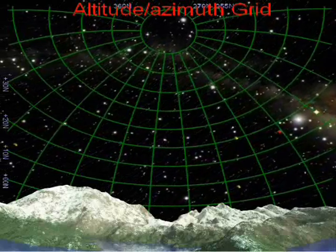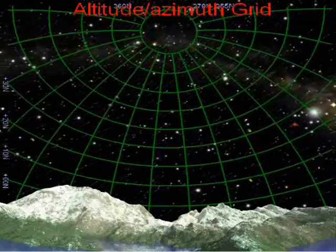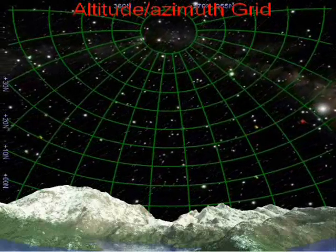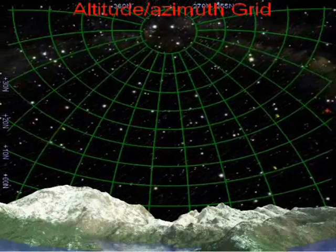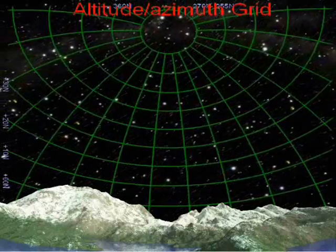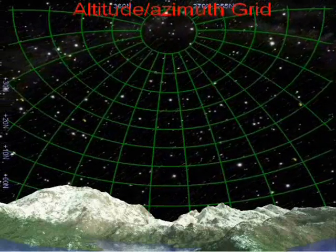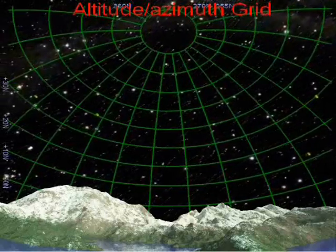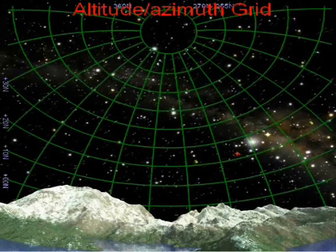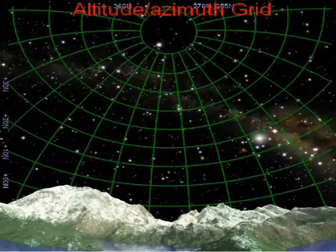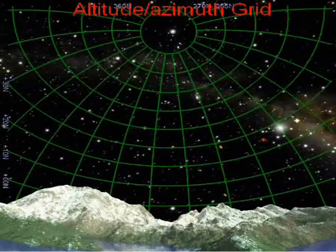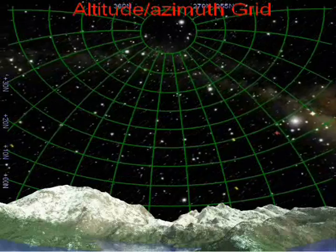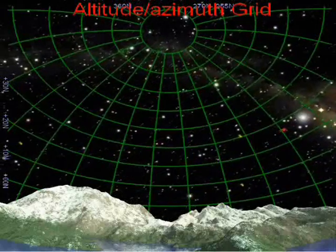The horizon-based coordinate system is used to specify the location of objects overhead. When you step outside your home and look into the night sky, the celestial objects you see might be low in the eastern sky, high in the southern sky, or directly overhead. In a general sense, each of these location descriptions is based on the horizon coordinate system.